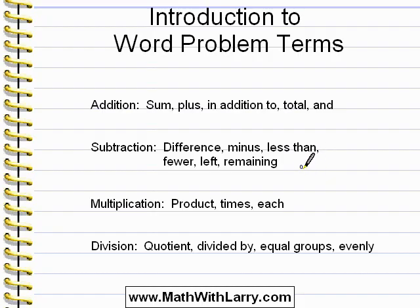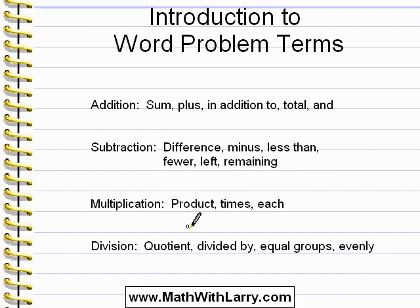If you see product, or times, or each, there's a good idea that you'll be doing multiplication. And if you see quotient, divided by, equal groups, or evenly, there's a good chance that division will be involved in the problem.